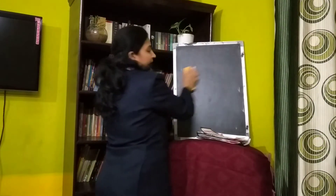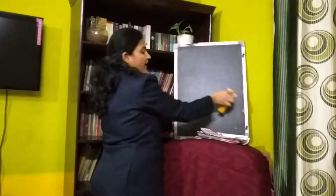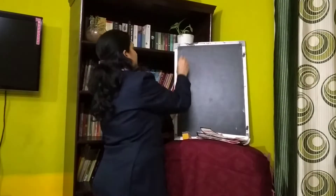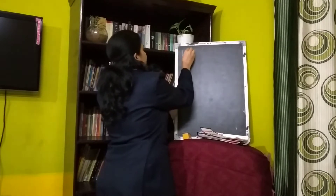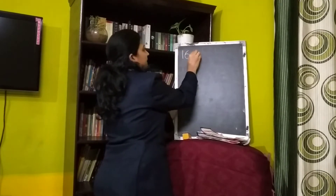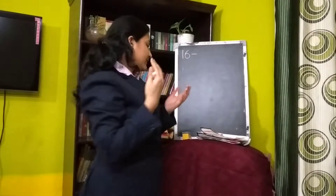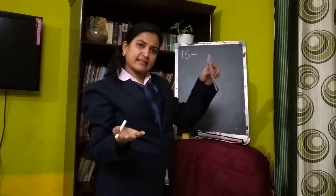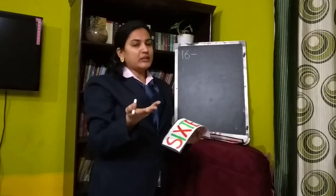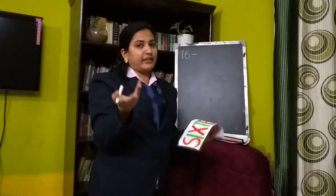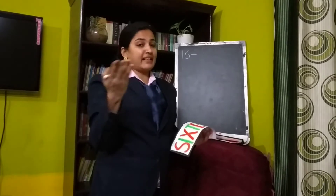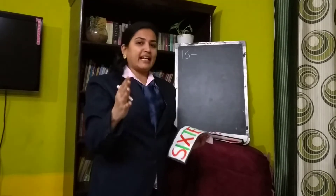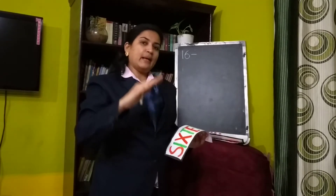Which number is next after 15? 16! Next number is 16. It is very simple to write 16. First you write six — S-I-X — then teen — T-E-E-N. So S-I-X-T-E-E-N, sixteen, 16.